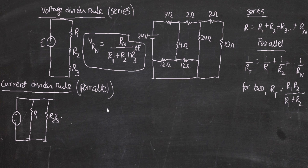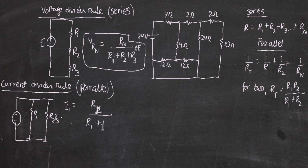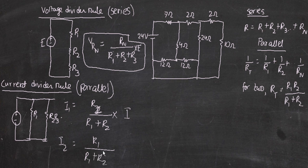In general, the current divider rule works like this: if you want to find the current across I1, then I1 equals R2 divided by (R1 + R2) multiplied by the total current I. It's the opposite resistor — so if you want to find I2, it will be R1 divided by (R1 + R2), or the total resistance, multiplied by the total current I.